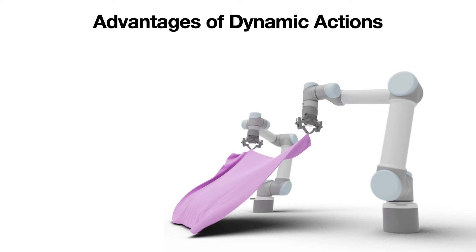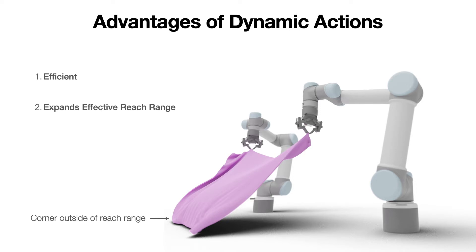Compared to quasi-static actions, dynamic actions have three desirable properties for unfolding deformable objects. First, they're efficient — with as little as one or two flings, the system could unfurl an initially crumpled cloth. Second, they expand the system's effective reach range, as high-velocity flings and throws can move parts of the cloth the arm might not be able to physically reach. Third, they're generalizable. While quasi-static actions rely on strategically chosen pick-and-place points, a dynamic flinging policy relies on high velocities to do most of its work. This means a dynamic action policy trained on one type of cloth, such as squared cloths, can generalize to different and more complex cloths, like shirts.